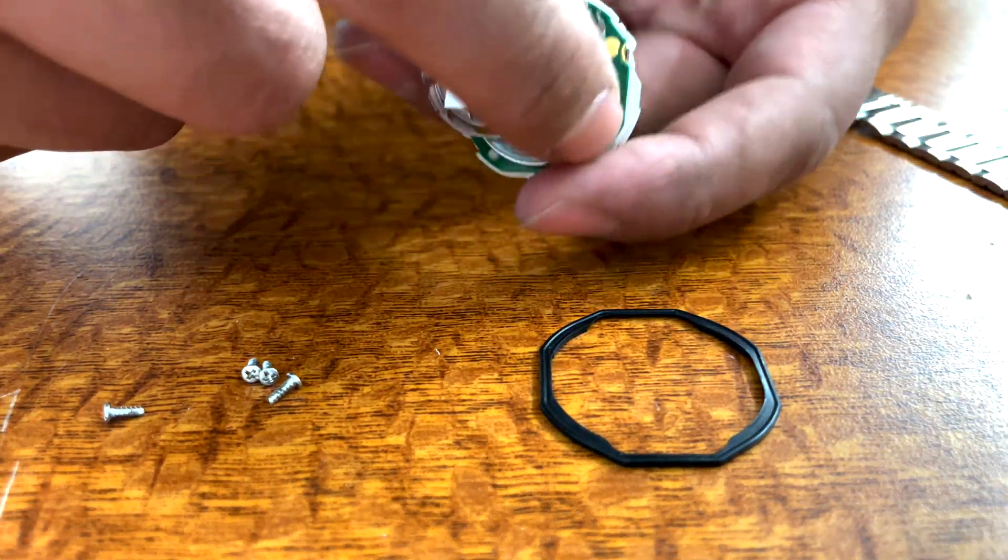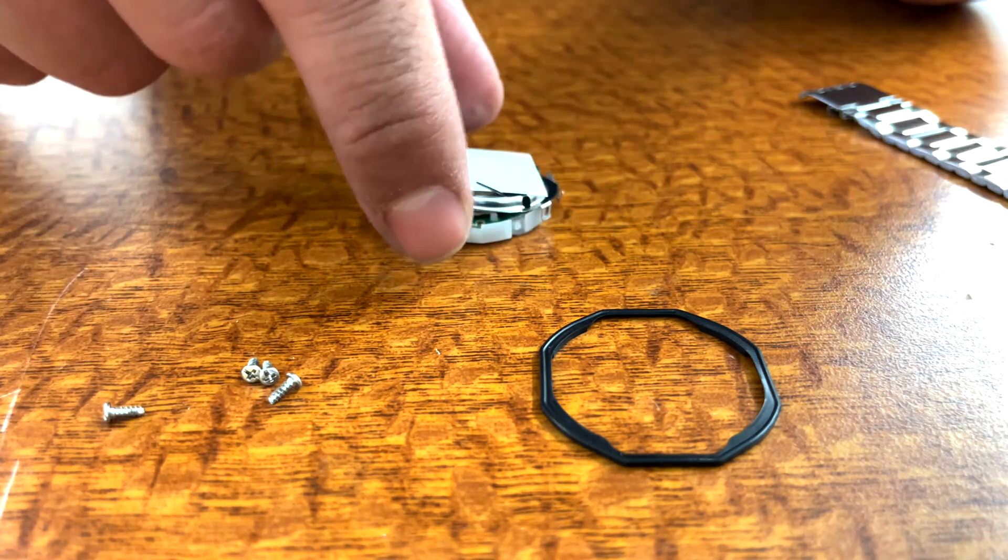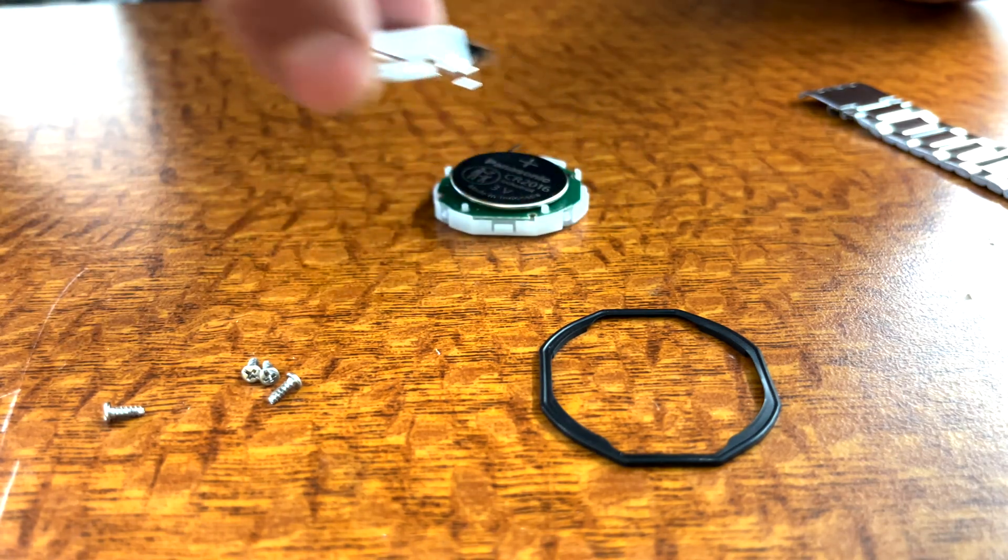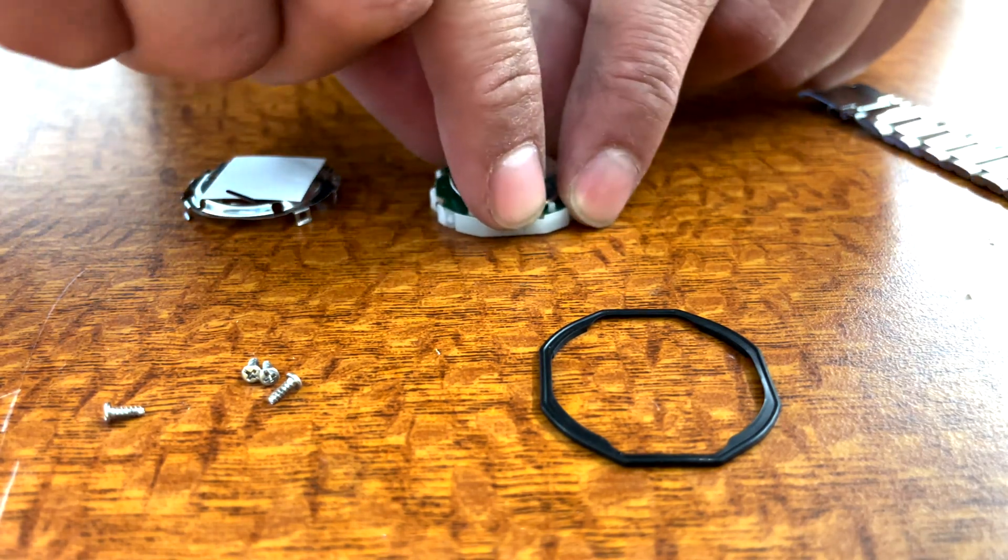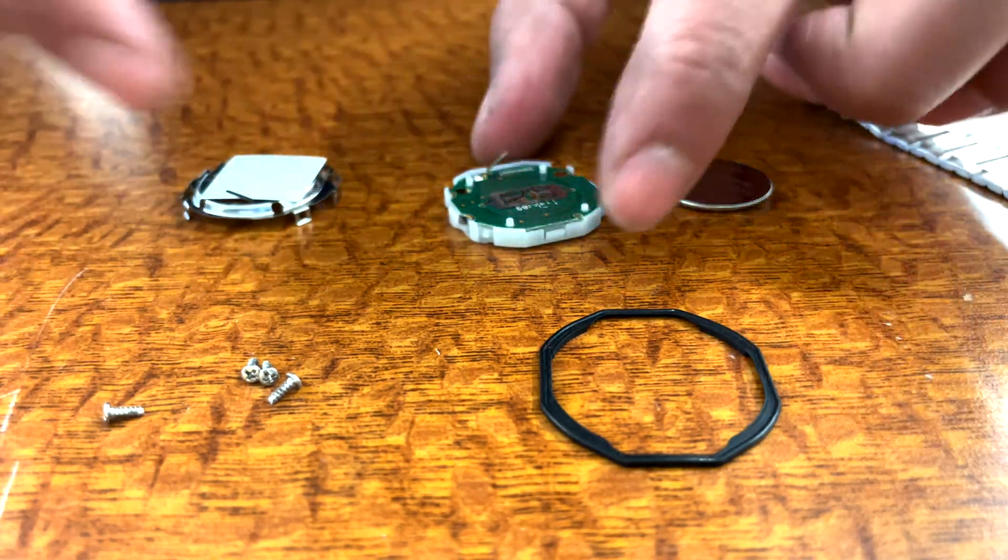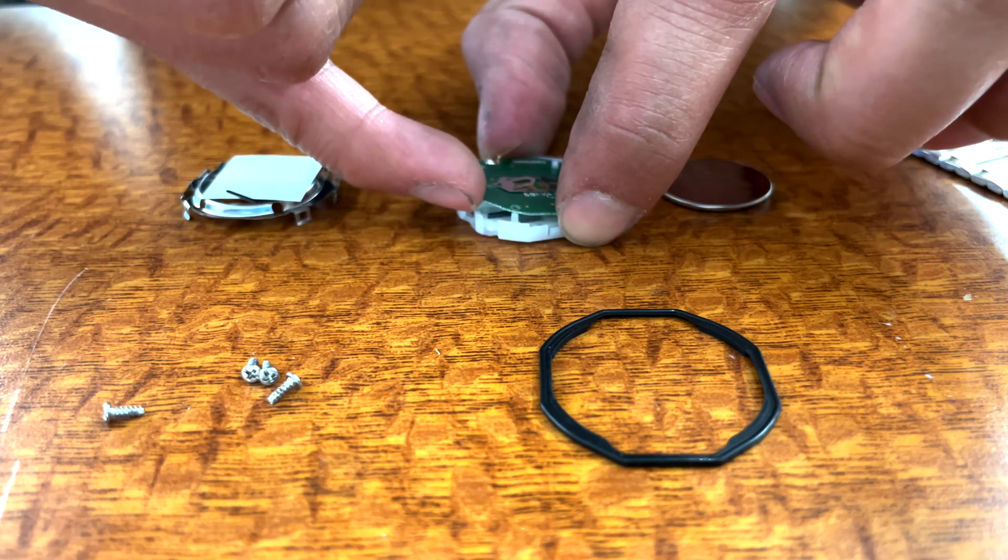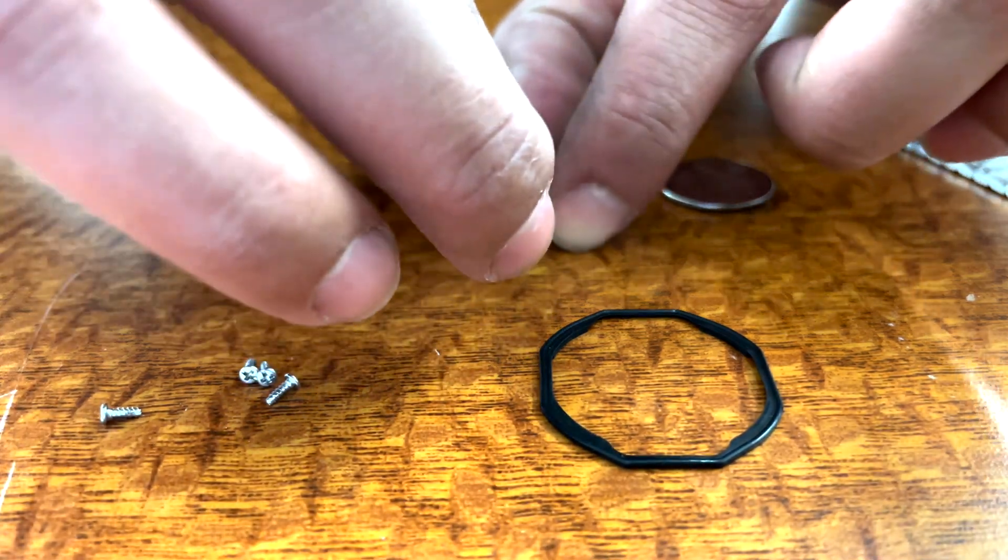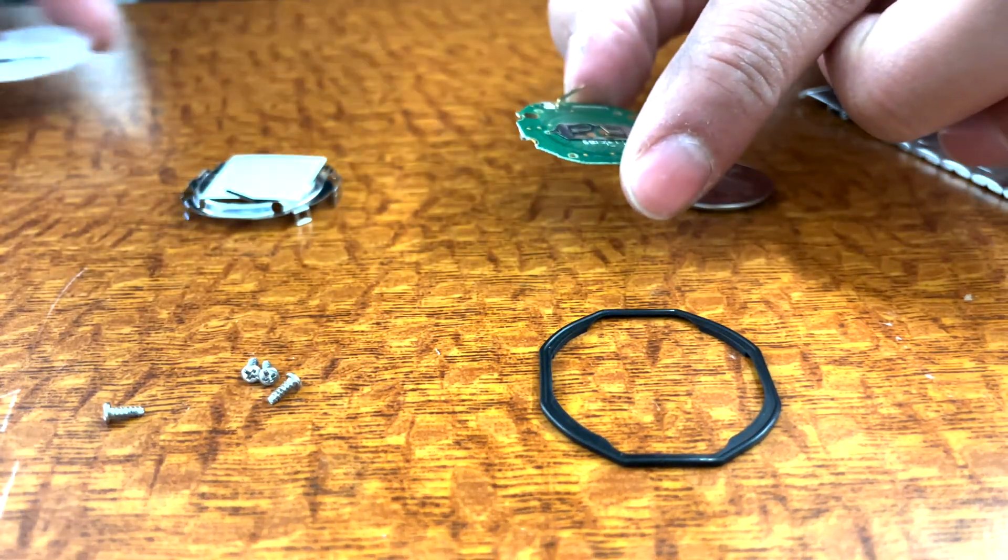With these four tabs disengaged, the back retaining clip should lift easily away from the watch's movement. Now you can remove the battery and set it aside. This green circuit board is the original quartz movement for the watch. Remove it and set aside the white plastic enclosure.